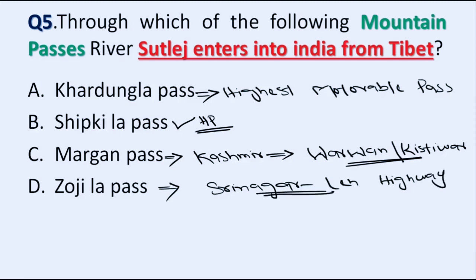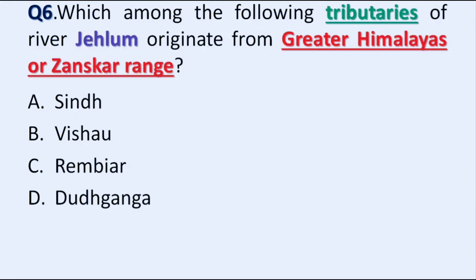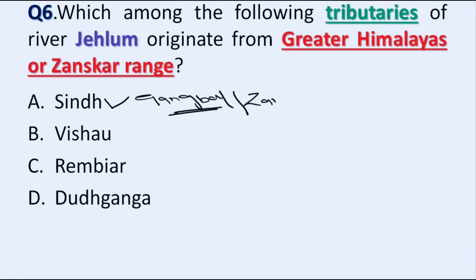Another question: which among the following tributaries of River Jhelum originates from the Greater Himalayas or Zanskar range? Option A: Sindh, B: Vesho, C: Rambir, D: Doodh Ganga. Correct answer is Option A, Sindh. Source of River Sindh is Gangbal Lake, which lies in the Zanskar range or Greater Himalayas.